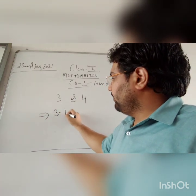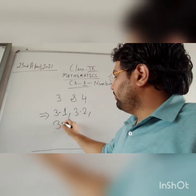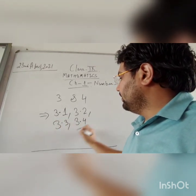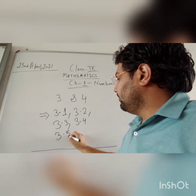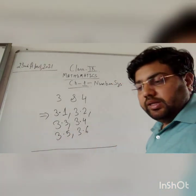So 6 rational numbers in between 3 and 4, we can write 3.1, 3.2, 3.3, 3.4, 3.5 and 3.6. I hope we are clear.